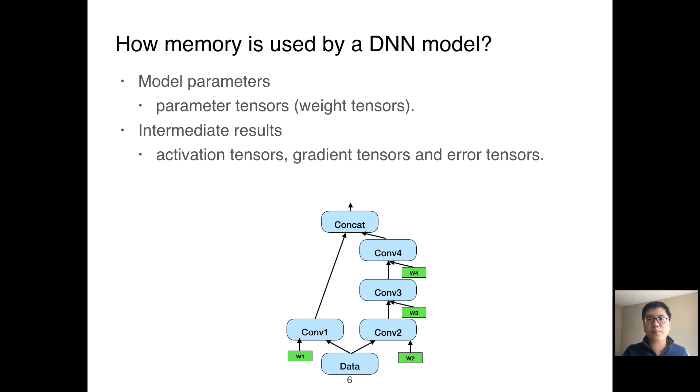As the model parameters are not created by any operators, we assume they are in CPU memory at the beginning of each iteration and they are required to be swapped into GPU memory before they can be used by the operator. However, their memory can be immediately reused unless their values are changed in the gradient update stage.